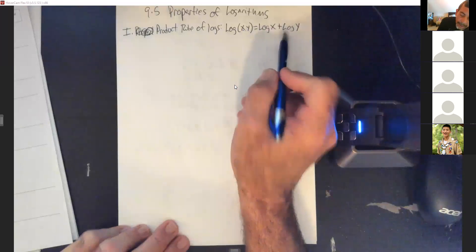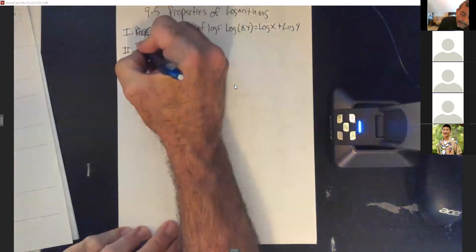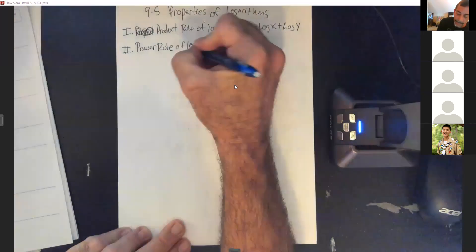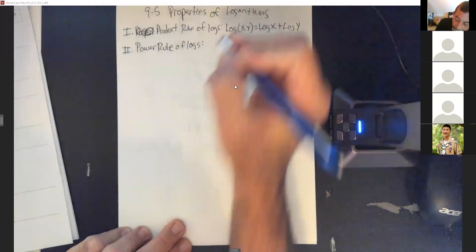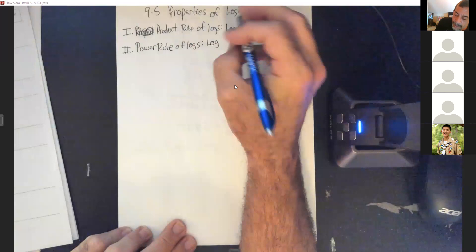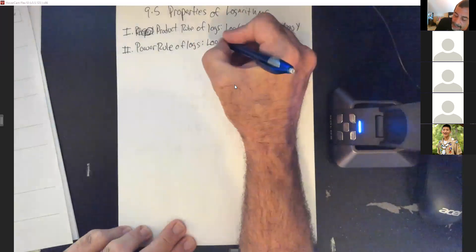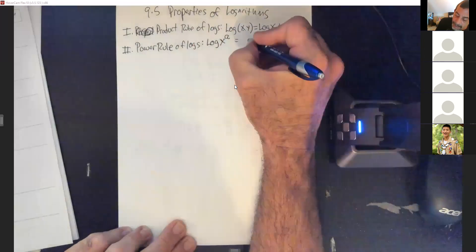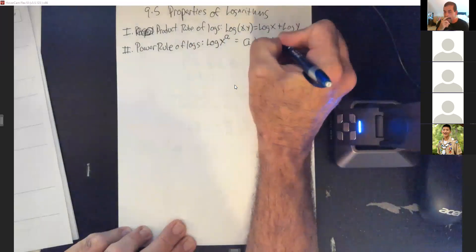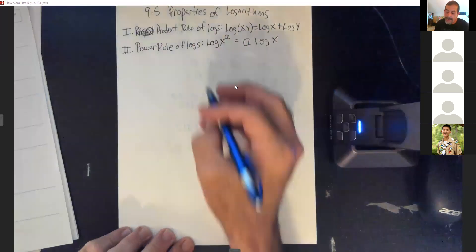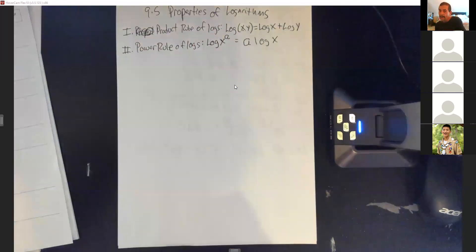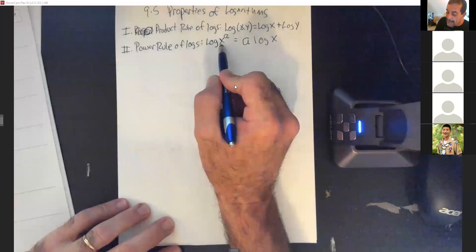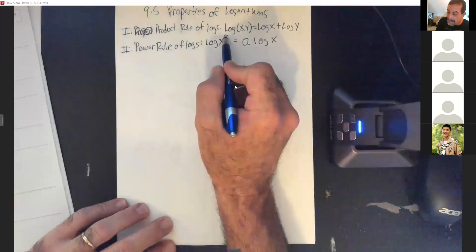The second rule is the power rule: if you have the log of a result raised to an exponent, you can rewrite it as a times the log of x. This is like when you had x squared to the third power — you multiplied the exponents. Since log of x is an exponent, multiplying that exponent times a gives you a product.